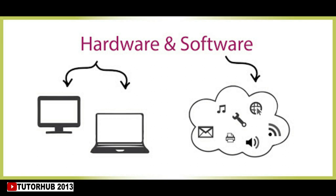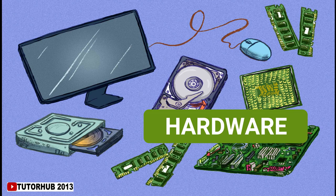Next, we shall discuss about computer hardware and software. A computer is made up of different parts and components that work together to form a computer system. The two basic components of a computer system are software and hardware. Hardware is the part of a computer that we can touch and feel.